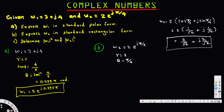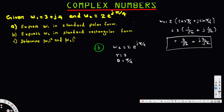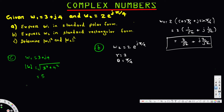Now for part C, we need to determine the magnitude squared of w1 and w2. For w1, which equals 3 plus j4, the magnitude is the square root of 3 squared plus 4 squared, which equals the square root of 25, equal to 5. The question asks for magnitude squared, so w1 magnitude squared equals 25.